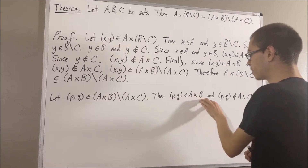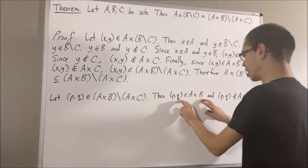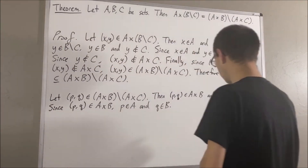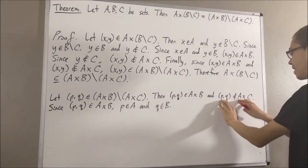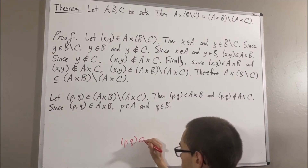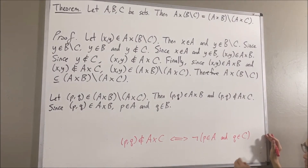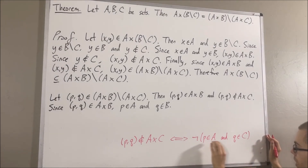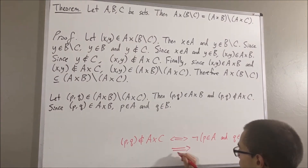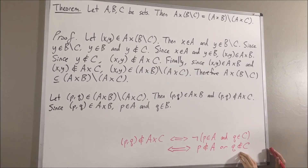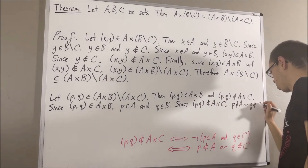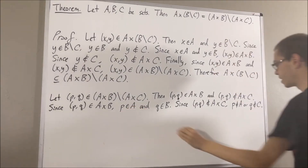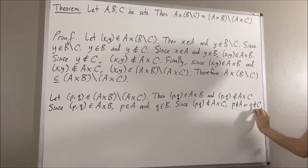Since P comma Q is an element of A times B, this tells us that P is an element of A, and Q is an element of B. But what does it mean for P comma Q to not be an element of A times C? It means it is not the case that both P is an element of A and Q is an element of C. And from de Morgan's laws, this is equivalent to saying P is not an element of A, or Q is not an element of C. But since P is an element of A, this eliminates the possibility that P is not an element of A — so we must have that Q is not an element of C.